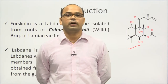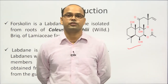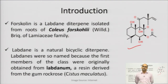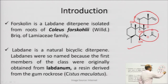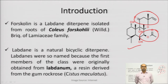Forskolin is a labdane diterpene and it is isolated from the roots of Coleus forskohlii. The plant belongs to the family of mint and tulsi, that is Labiateae or Lamiaceae family. The name labdane is used because phytoconstituents with such structures were first isolated from labdanum, which is a resin derived from the gum rock rose plant Cistus maculatus.